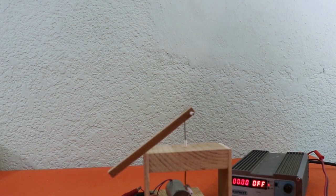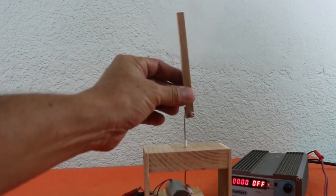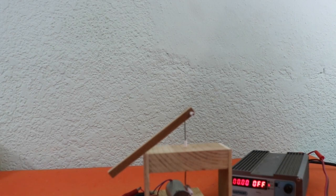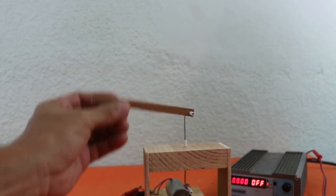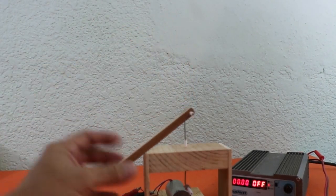As you could see, the pendulum now stays in the vertical position. The equilibrium conditions change when we power the motor and now the vertical position is a stable equilibrium point of the system.